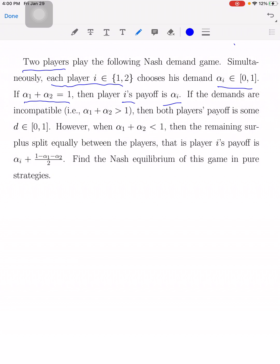However, if the demands are incompatible, meaning alpha 1 plus alpha 2 is strictly greater than 1, then both players' payoff is some number d in an interval 0, 1. The d is sometimes also called as outside option.